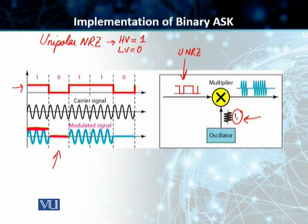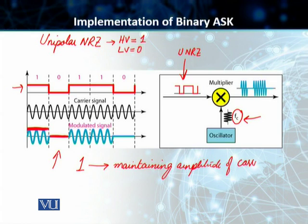So in essence, what we are doing is, in the case of 1, we are maintaining or holding the amplitude of the carrier. And in the case of a 0, we have a 0 amplitude.